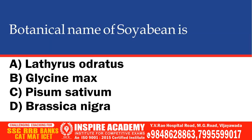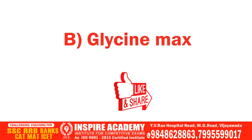Botanical name of Soya bean is which of the following? Options: Lathyrus odoratus, Glycine max, Pisum sativum, Brassica nigra. The correct option is Glycine max.